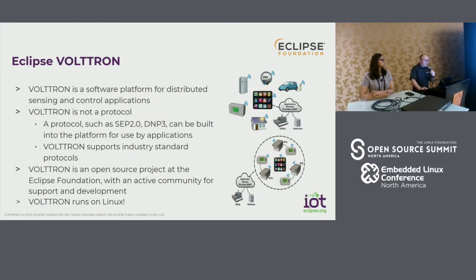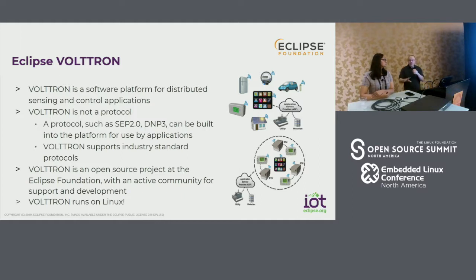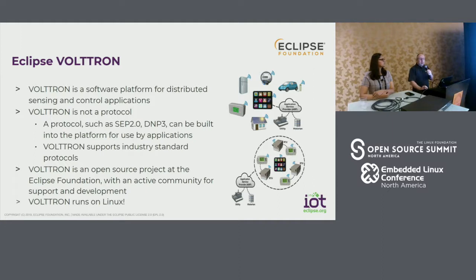What is Voltron? Voltron is really a software platform for distributed sensing and control applications — this is not just about measuring stuff, it's about controlling stuff as well. Importantly, Voltron is not a specific protocol. It's a platform that supports many protocols and will integrate with VAVs and whatever equipment you already have in the digital building space. Specifically, it supports Modbus and BACnet as two of the leading protocols you'll find in the market. Voltron is an open source project, completely permissively licensed at the Eclipse Foundation, though it originated at Pacific Northwest National Laboratory.